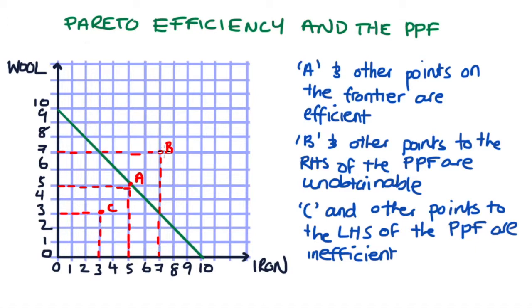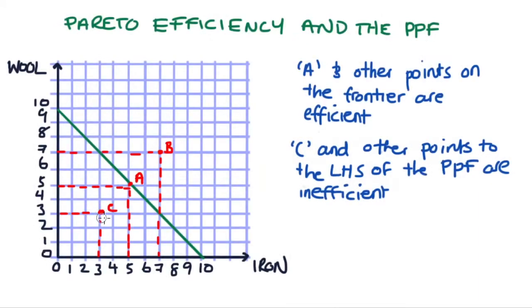I think the sense in which points like B are unobtainable is fairly intuitive. Economics is all about scarce resources, we can't do everything we want. The points to the right hand side of the PPF are those combinations of output that we just can't manage given our current technological state and amount of resources.